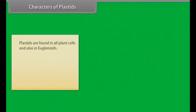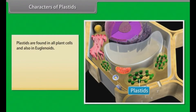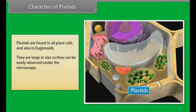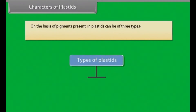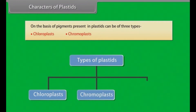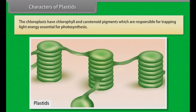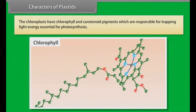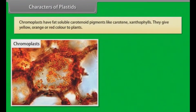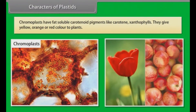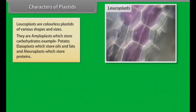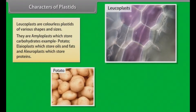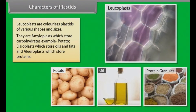Characters of plastids. Plastids are found in all plant cells and also in euglenoids. They are large in size so they can be easily observed under the microscope. They have specific pigments that give color to plants. On the basis of pigments present, plastids can be of three types: chloroplasts, chromoplasts and leucoplasts. Chloroplasts have chlorophyll and carotenoid pigments responsible for trapping light energy essential for photosynthesis. Chromoplasts have fat-soluble carotenoid pigments like carotene and xanthophylls, giving yellow, orange or red color to plants. Leucoplasts are colorless plastids of various shapes and sizes — amyloplasts store carbohydrates (e.g., potato), elaioplasts store oils and fats, and aleuroplasts store protein.